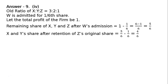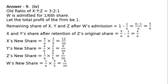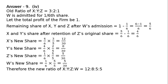This 4/6 will be distributed among X and Y. Since the question does not specify, it will be in the original ratio of 3:2. X's new share: 4/6 multiplied by 3/5 equals 12/30. Y's new share: 4/6 multiplied by 2/5 equals 8/30. Z's new share: 1/6 multiplied by 5/5 equals 5/30. W's new share: 1/6 multiplied by 5/5 equals 5/30. Therefore the new ratio of X to Y to Z to W is equal to 12:8:5:5.